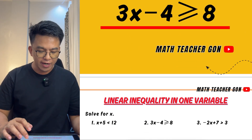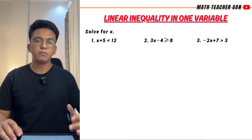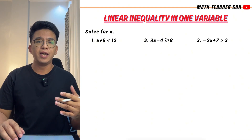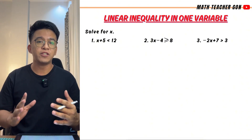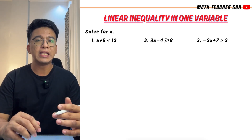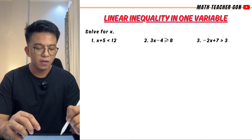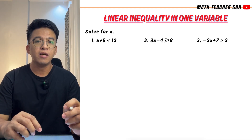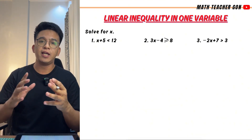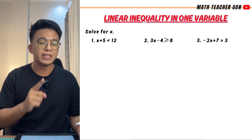What we have here are examples of linear inequalities in one variable. Now, what is the difference between a linear equation and a linear inequality in terms of values of x? In a linear equation, we can get an exact or one possible value of x. Here, for a linear inequality, there is a possibility that the value of x is more than one and it goes infinite. So let's start with item number one for you to realize what I'm saying.